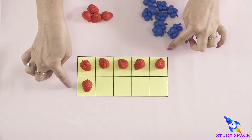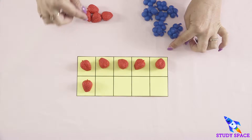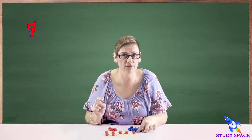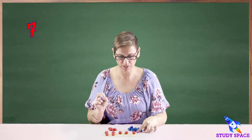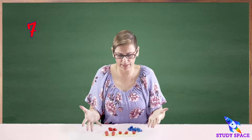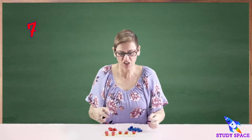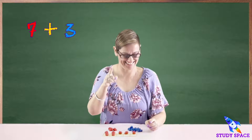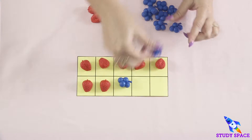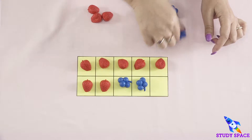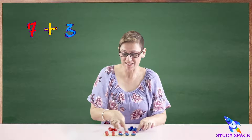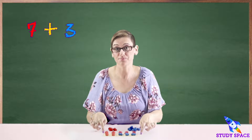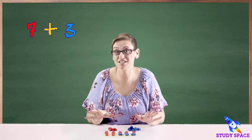We've got six strawberry friends; I want to add one more, which will give me seven. So how many blueberry friends will I need? I think I'm going to need three. One, two, and three. So seven plus three equals ten.